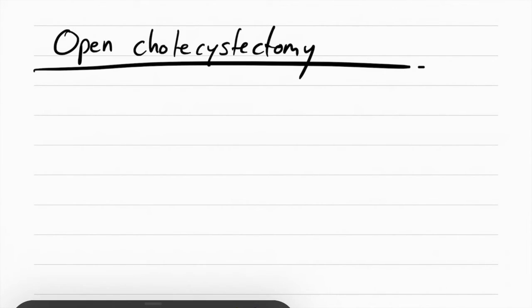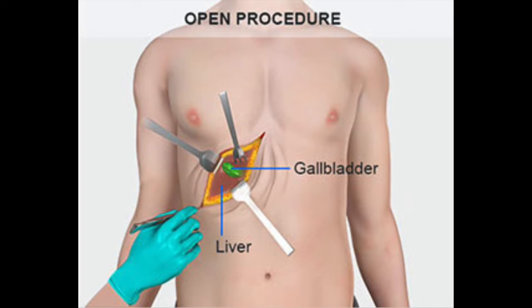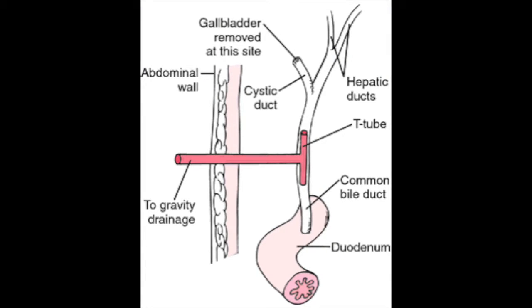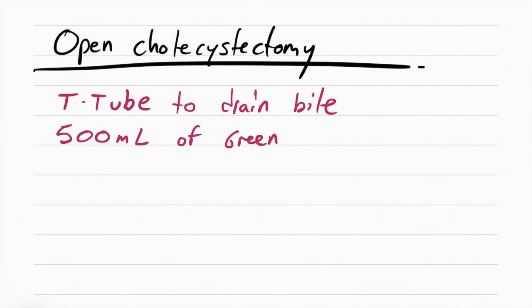Another type of surgery that can be used is called an open cholecystectomy. An open cholecystectomy is when they make a large incision and take out the gallbladder. They're not very common anymore, but you should still know what it is. After the procedure, they put a T-tube in place to drain the bile that's there. You should expect about 500 ml of green drainage per day.